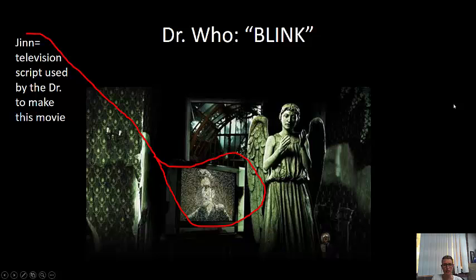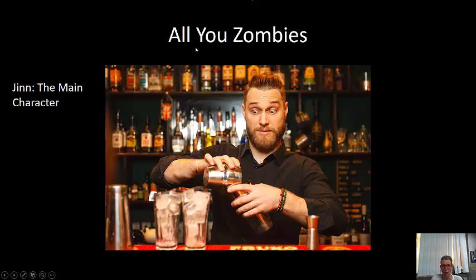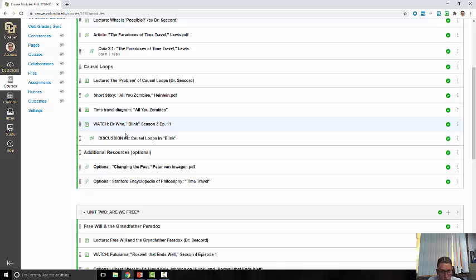For your discussion post, I would like you to watch an episode of Doctor Who. It involves Ludovician time travel — Lewis's type of time travel in a four-dimensional universe. The GIN in this episode is the television script, or the content of the message that the Doctor is giving on the television. I would like you to draw a temporal map of the causal loops involved in this story. I have provided you with a sample map for 'All You Zombies' as a time travel diagram.